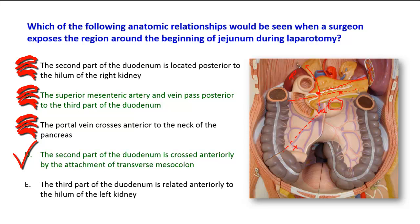The four parts of the duodenum are retroperitoneal, except for the beginning of the first part of the duodenum, where it is connected to the lesser omentum whose free border contains the hepatic triad — portal vein, hepatic artery, and bile duct — and the terminal part of the fourth part of the duodenum, which is connected at the duodenojejunal junction where it becomes intraperitoneal. All other parts are retroperitoneal. The third part is crossed by the mesentery of the small intestine, and the second part is crossed by the mesentery of the transverse colon.